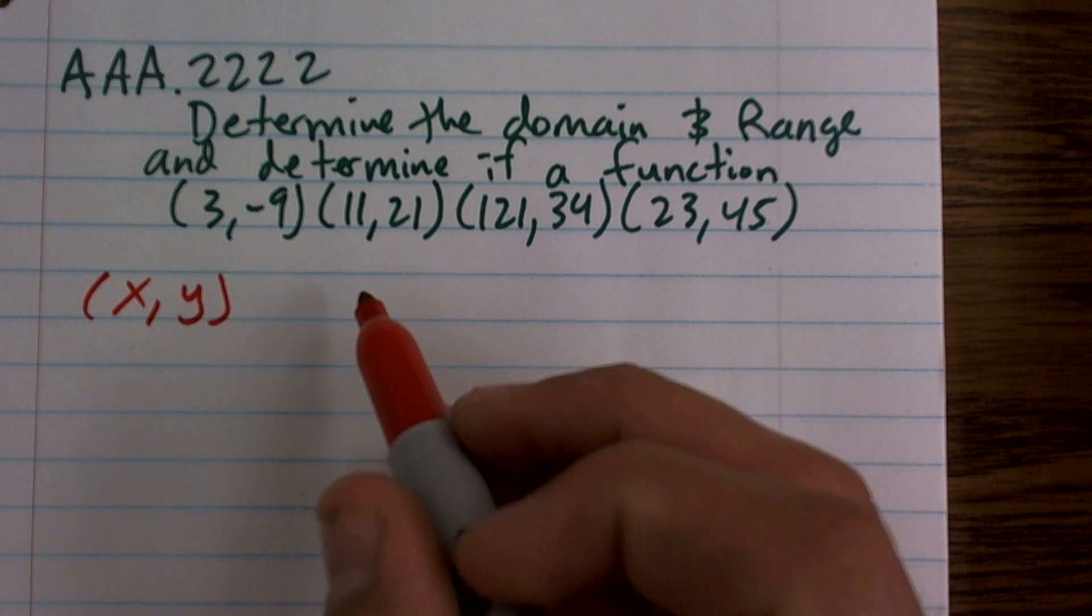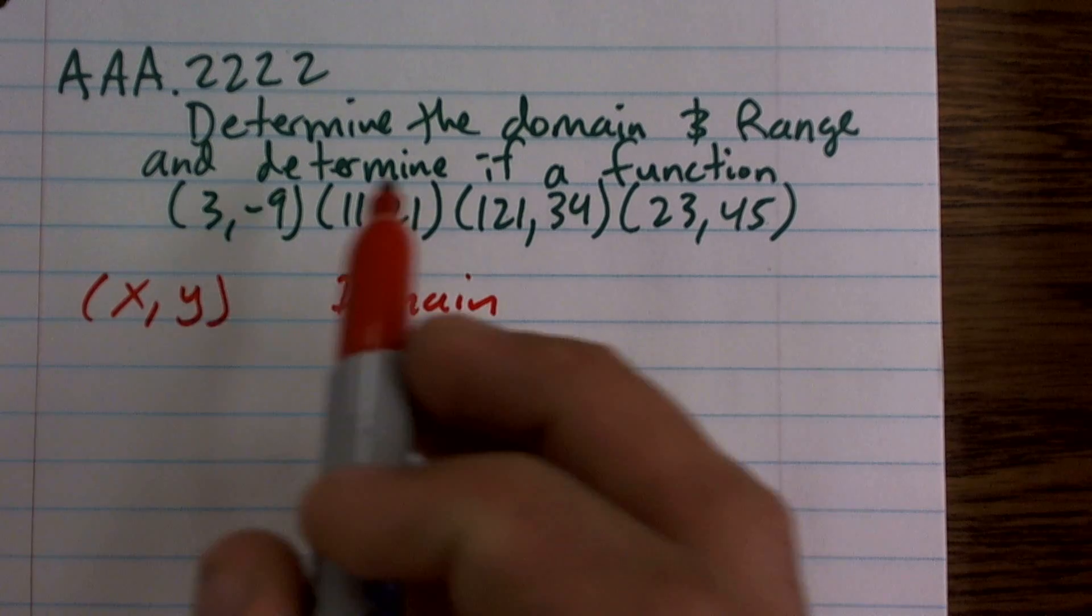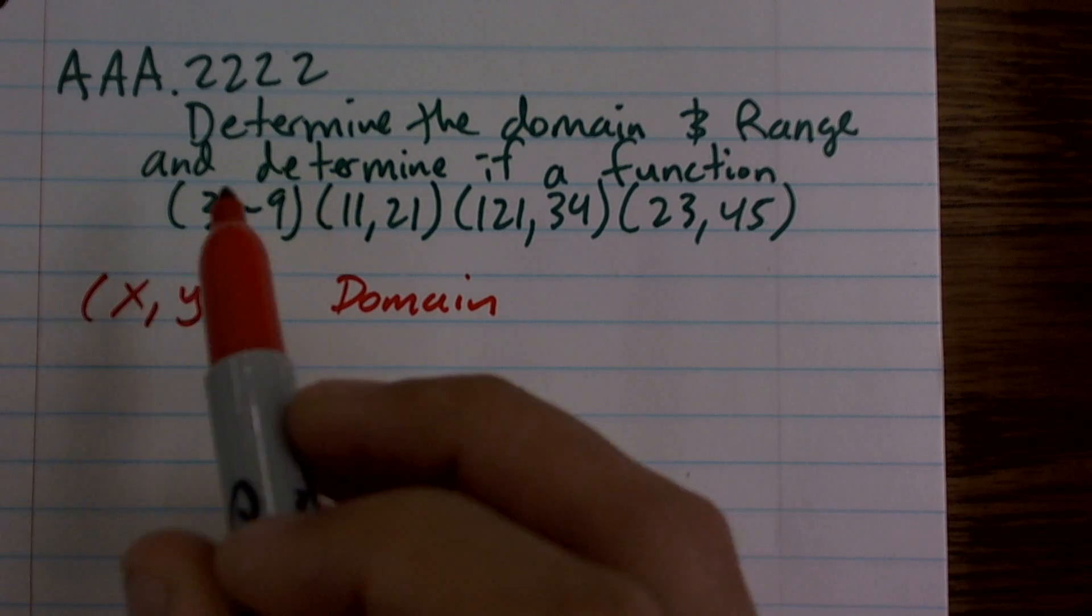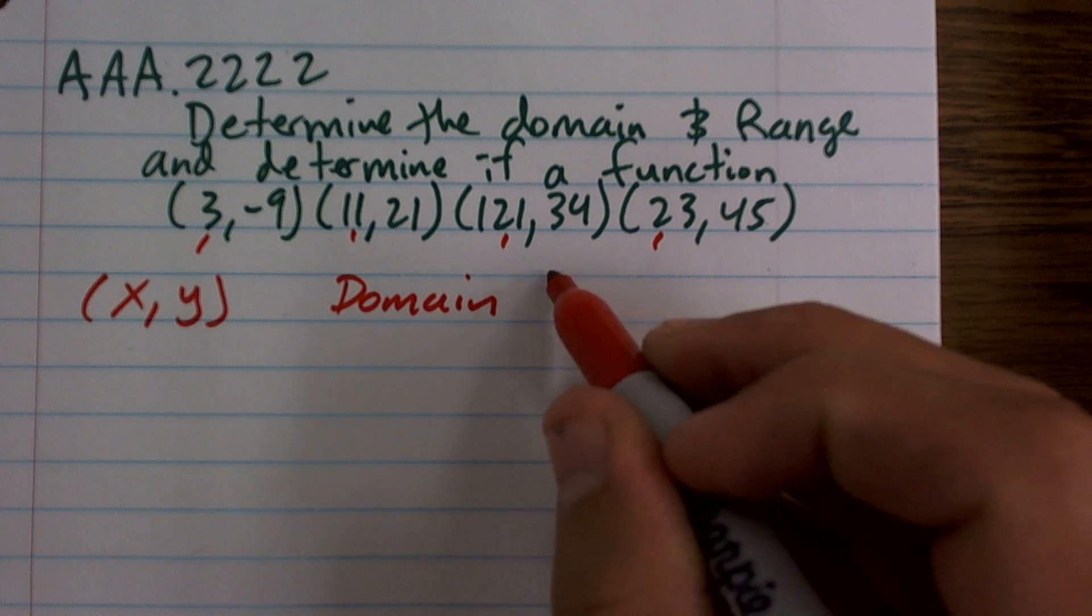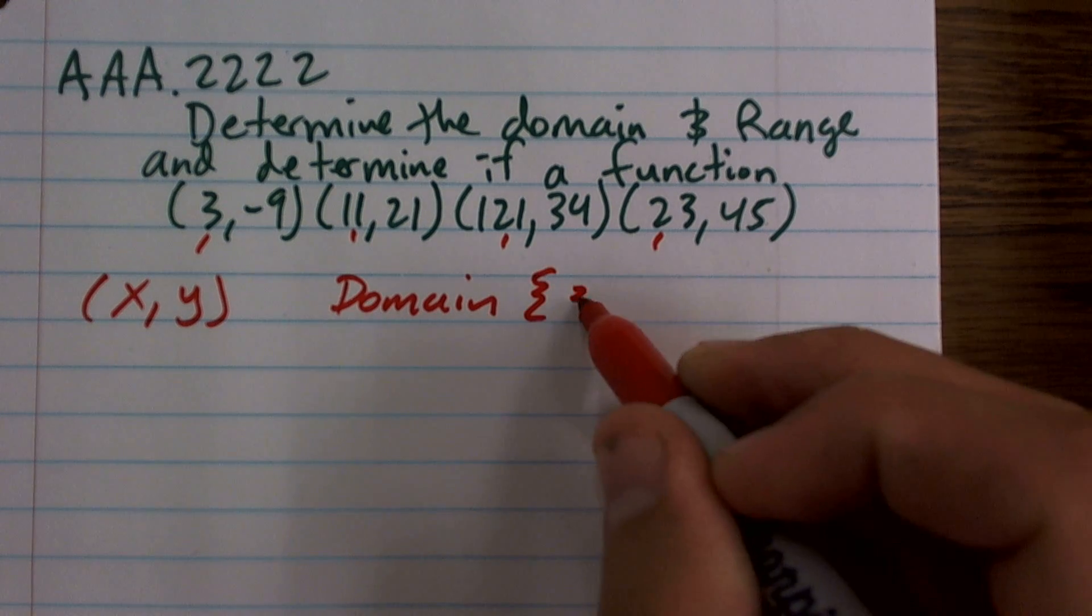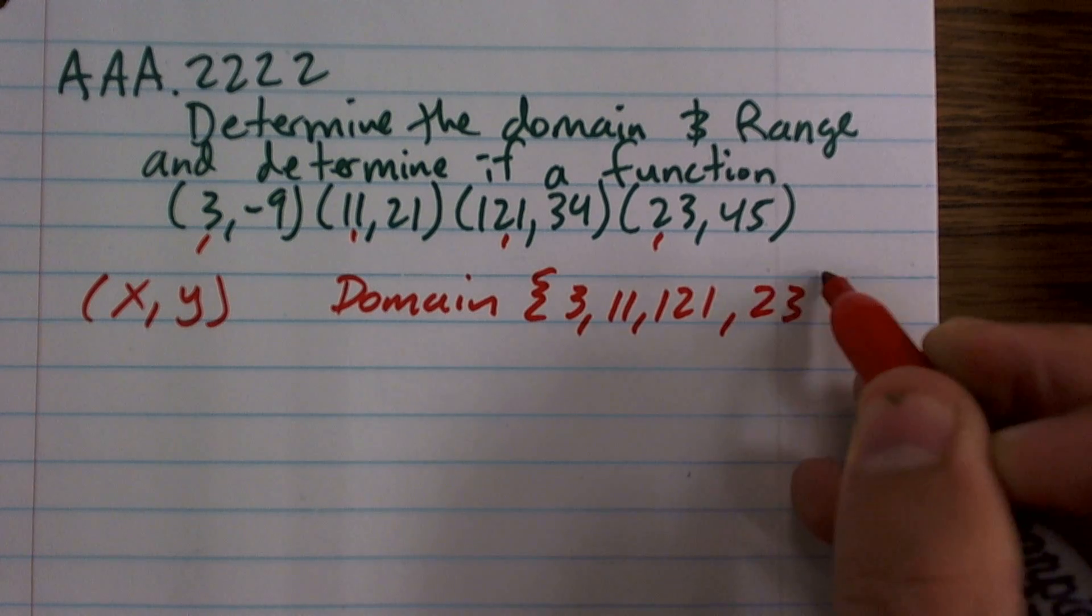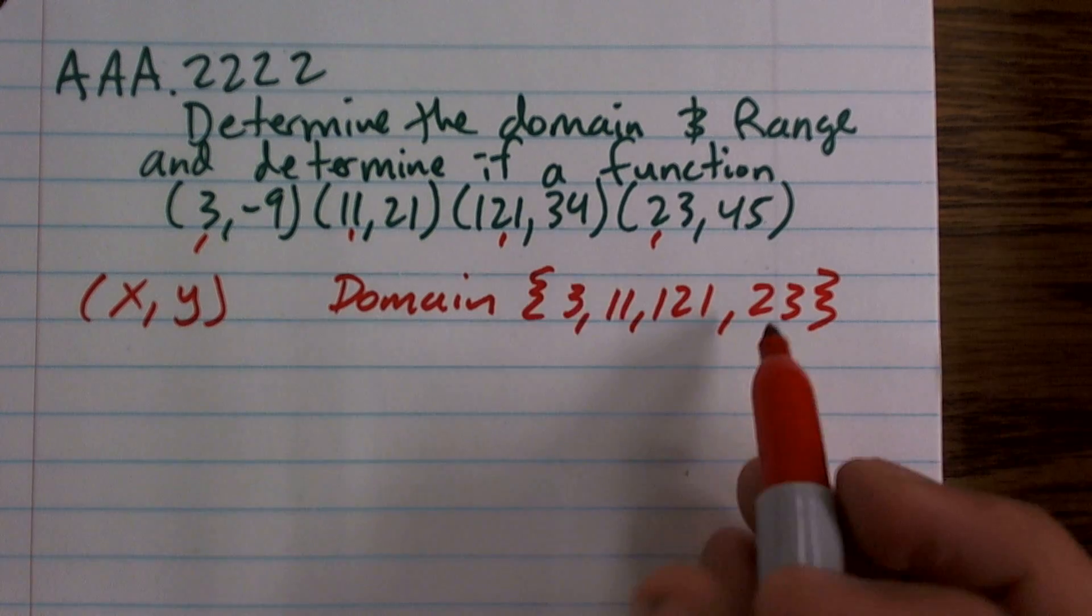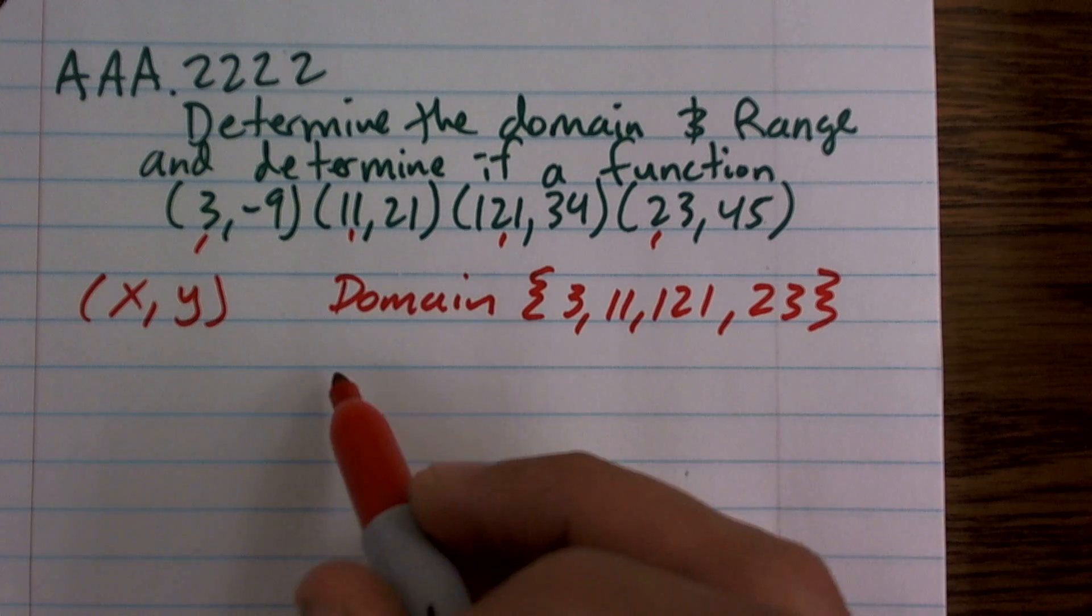So when doing this, what I'm going to do is when I want to write my domain, all I'm going to say is my domain is going to be all my x values, which will be 3, 11, 121, and 23. So I'm just going to write those all in the same set, 3, 11, 121, and 23. So you can notice those are all the x coordinates of each one of my coordinate points.